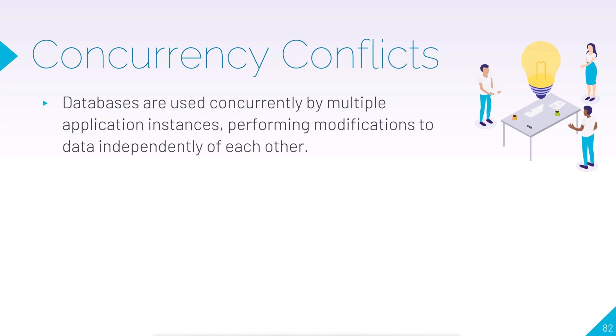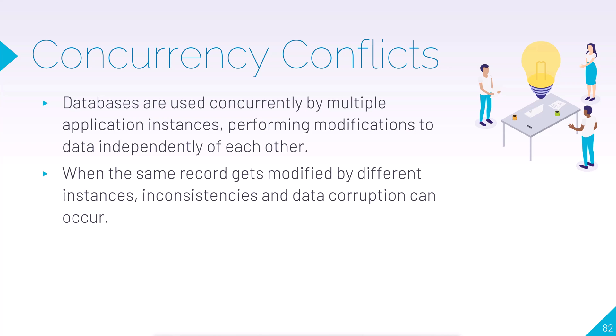Databases are used concurrently by multiple application instances. In a web application, you have several persons doing several operations against the same database, and sometimes even the same data or records. They're doing it independently of each other. As you've seen with each request, there's a brand new instance of a database connection, and EF Core is tracking stuff in memory based on that particular request. When two different instances modify the same record simultaneously, that can lead to corruption and inconsistencies in the data.